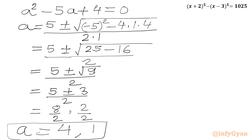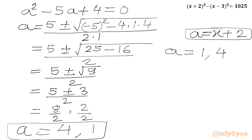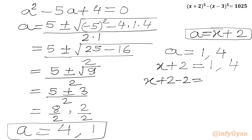Now a was our substitution for x plus 2. So x plus 2 equals 1 gives x equals negative 1, and x plus 2 equals 4 gives x equals 2. So our final answers are x equals negative 1 and x equals 2.